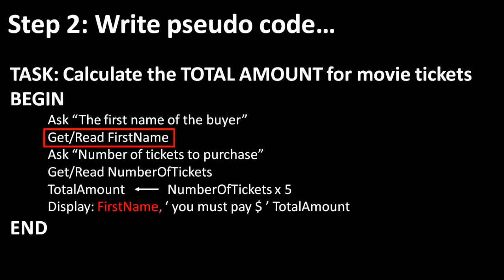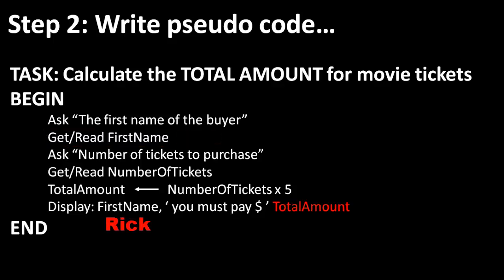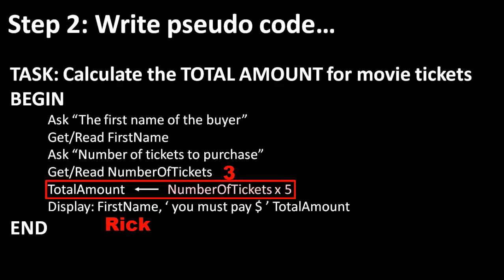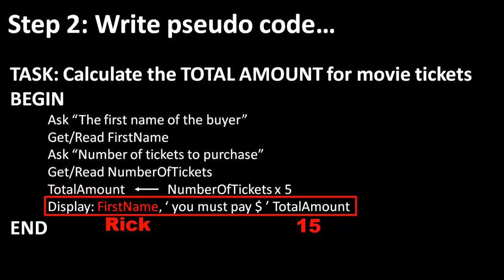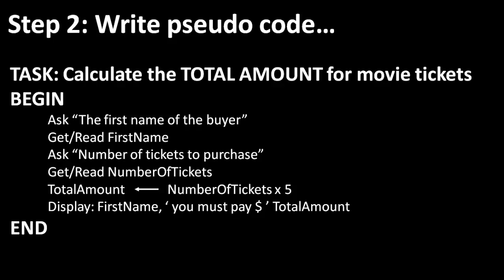For example, if the user typed Rick, the value in the first name placeholder will be Rick. If the user typed 3 for the number of tickets, the value in the number of tickets placeholder will be 3. That line will then take the value 3 and multiply it by 5, because the price of one ticket is $5. 3 times 5 is 15, and the value of 15 will be assigned to the total amount placeholder. I then display the value in the first name placeholder, which is Rick, followed by the phrase 'you must pay', a dollar symbol, and then the value of the total amount placeholder, which is 15. My output will therefore read: Rick, you must pay $15. You have now extracted all the important requirements from the problem statement and written zero code to understand the logic and flow of your application.